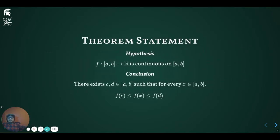We start by stating the theorem. Our hypothesis states that f is a continuous function on a closed interval from a to b. Here, a and b are finite real numbers. Our conclusion is that you can find c and d in the interval, and c and d may or may not be the endpoints, but they have the property that for any x in the interval from a to b, the output of the function f(x) is guaranteed to be between f(c) and f(d).